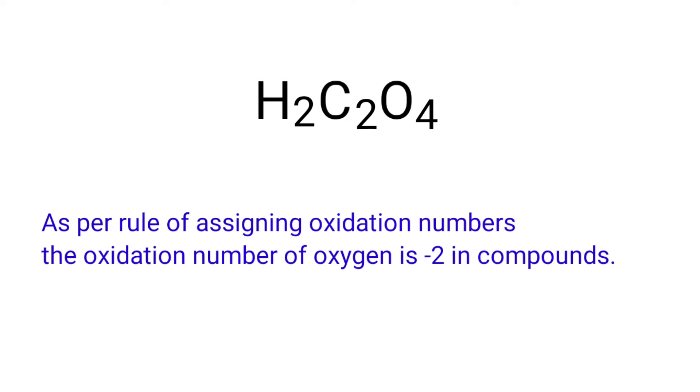As per the rules for assigning oxidation numbers, the oxidation number of oxygen is -2 in compounds. We can write the oxidation number of the element above its symbol and the total oxidation number of the atoms below its symbol.